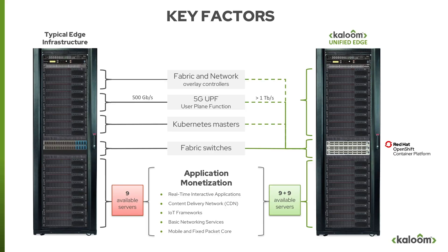A 5G telco edge requires support for a UPF — the User Plane Function — for all IP packets sent and received from any device connected to the 5G network. A bare minimum of 500 gigabits per second is needed at the edge, and with throughput of around 200 gigabits per server, three additional servers are needed strictly for the UPF function itself.